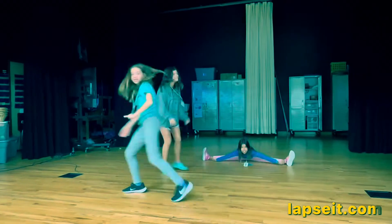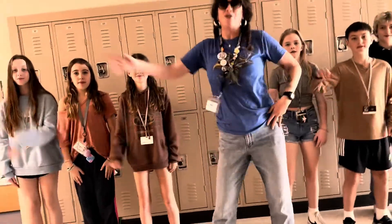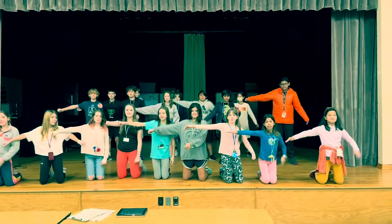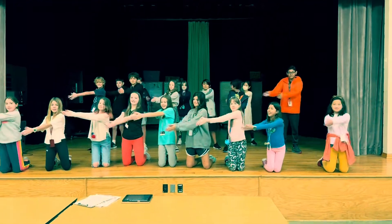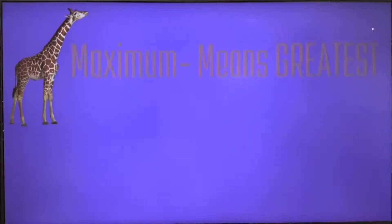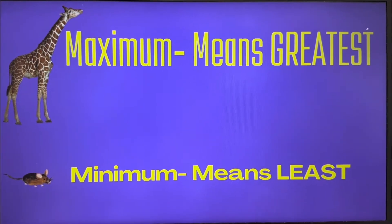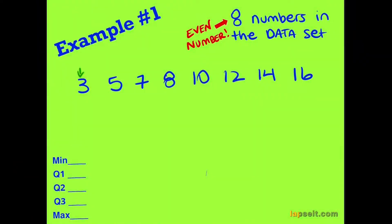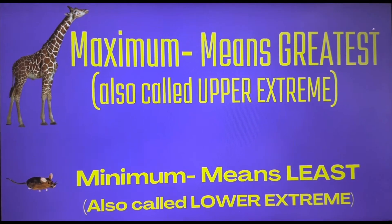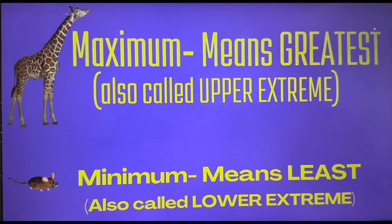That's the five-number summary. Greatest. The least. The middle, the middle, the middle. The greatest. The least. The middle, the middle, the middle. Talk about the max and minimum. Put them in order before you begin. The min and the max are the numbers on each end. Greatest and least is what you mean when you say upper and lower extreme.